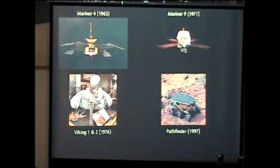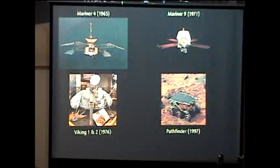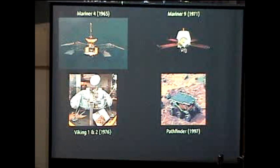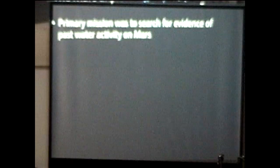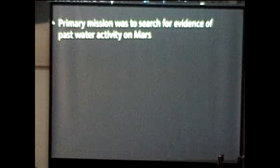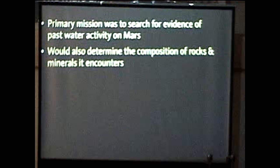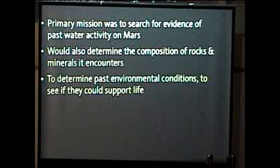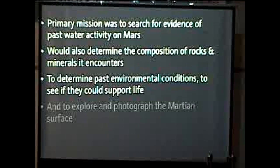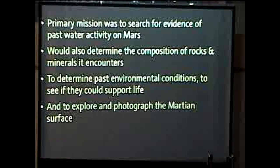But after Pathfinder, NASA started thinking about yet another mission because the Sojourner rover didn't really go all that far. It just gave us information right around the landing site. They thought up another mission concept and called it the Mars Exploration Rover Program. The objectives of this program were primarily to search for evidence of past water activity on Mars. It also had secondary objectives, for example, to determine the composition of rocks and minerals it encounters, to determine past environmental conditions on Mars to see if they could support life, and also just explore and photograph the Martian surface. Basically, just go around and take pictures of stuff.